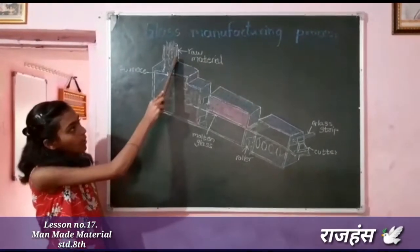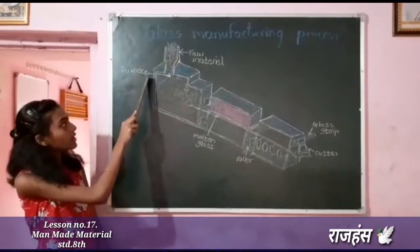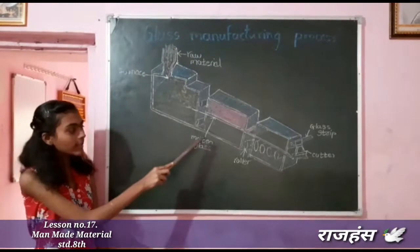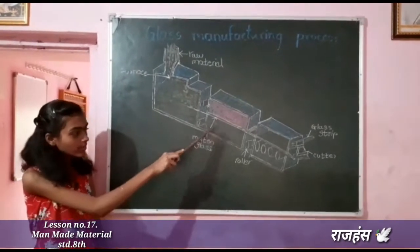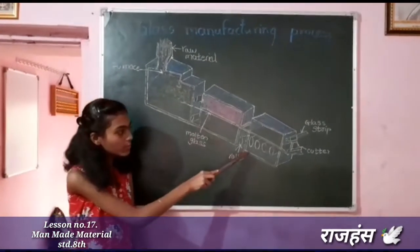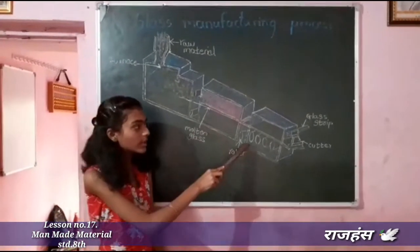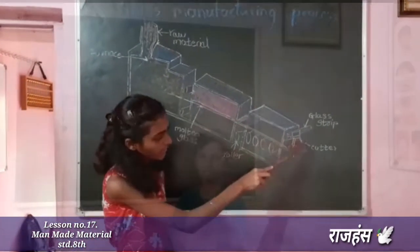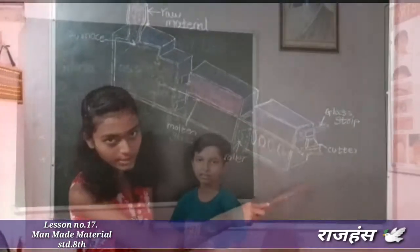This is the process of glass manufacturing. Here is the raw material. Here is a furnace. Here is molten glass. Here is a ruler. Here is a glass chip. And here is a cutter.